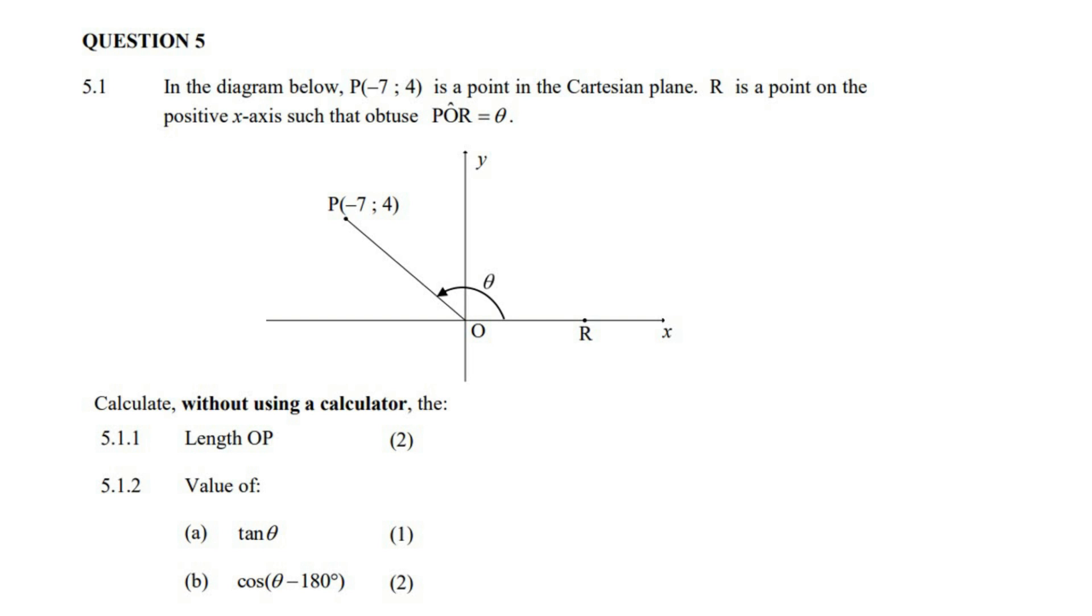In the diagram below, P is a point on the Cartesian plane, R is a point on the positive x-axis such that obtuse angle POR is theta. Calculate without using a calculator the length of OP.